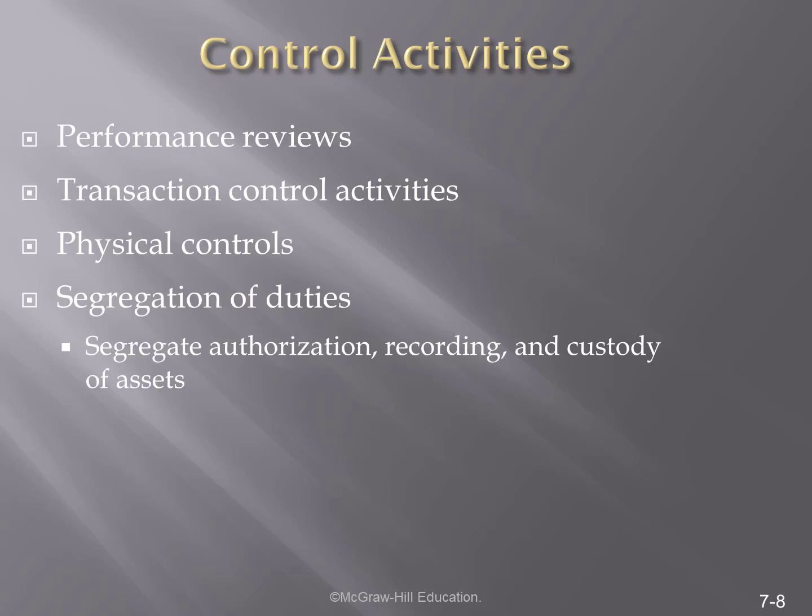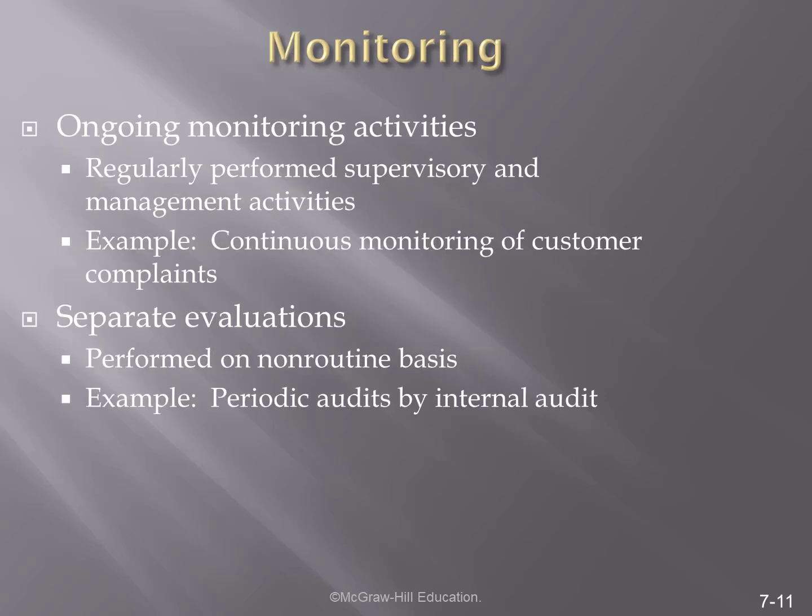Control activities are the policies and processes implemented by management to reduce risk. For example, completing an annual performance review of personnel is a control activity. Establishing transactional controls is another control activity. Physical controls — barriers, locks, doors — are examples of physical controls implemented by management. Segregation of duties, where we segregate authorization from recording and custody of assets, prevents a single individual from having too much control over a specific asset.